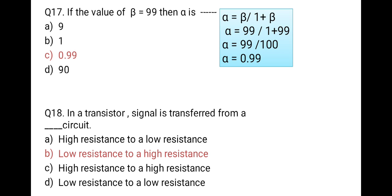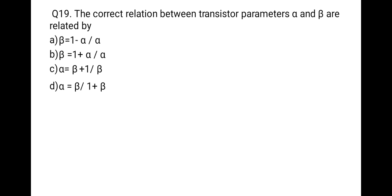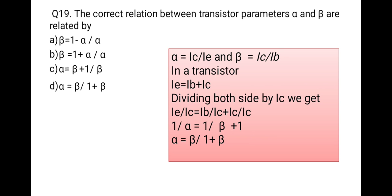The next question: the correct relation between transistor parameters alpha and beta. We know that in a transistor, emitter current equals the sum of base current and collector current: IE = IB + IC. Dividing this equation by IC gives: IE/IC = IB/IC + IC/IC.